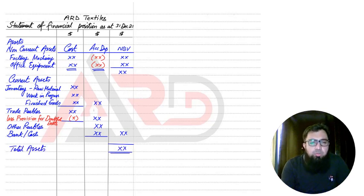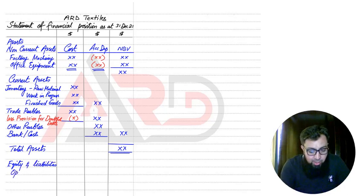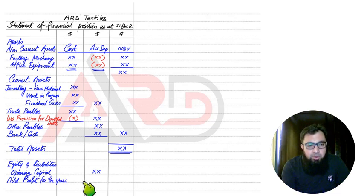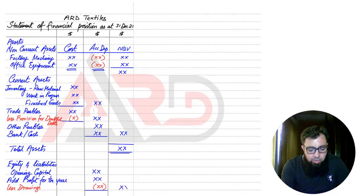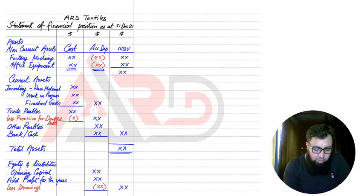In the accounting equation, assets equals capital plus liabilities. The next heading is equity and liability, or capital and liability. The capital section is the same as for a sole trader: we start with opening capital, which is given in the examination question, then add profit for the year — calculated from the income statement. Then we have drawings, whether in cash, cheque, or goods form; all drawings are added to calculate total drawings.